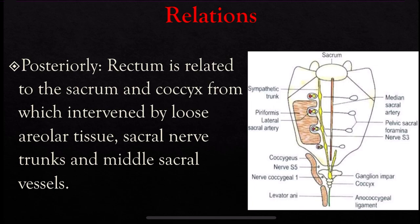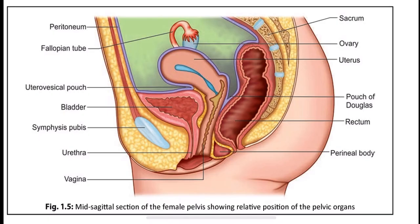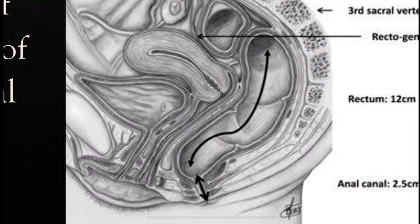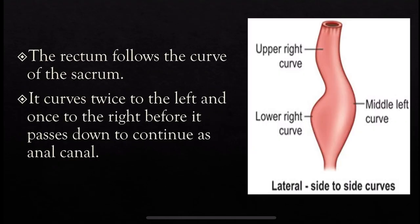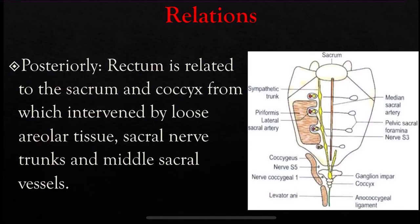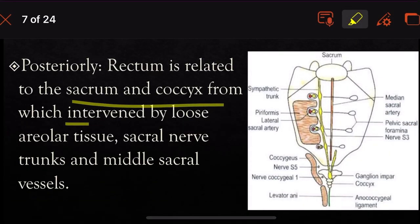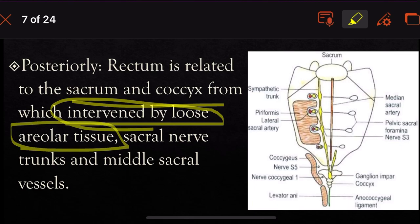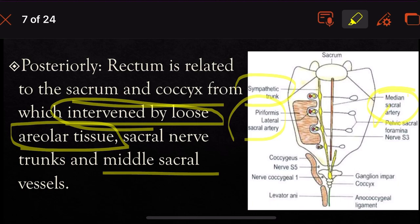The posterior relations of the rectum — posteriorly, the rectum is related to the sacrum and coccyx, from which it is separated by loose areolar tissue. We also have the sacral nerves and the middle sacral vessels — the piriformis, lateral sacral artery, and median sacral artery — as well as nerves and areolar tissue posterior to the rectum.